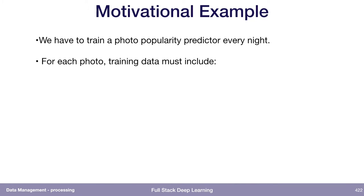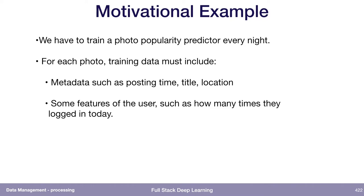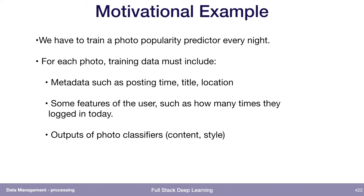For each photo we need the metadata — like when was the photo posted, the title the user gave, the location they took it at. Maybe something about the user, like how many times did they log in today, how many followers did they have. We also think that photos of cats become popular more often than dogs, so we're actually going to run our cat and dog classifier on all the photos that are uploaded and store the results somewhere.